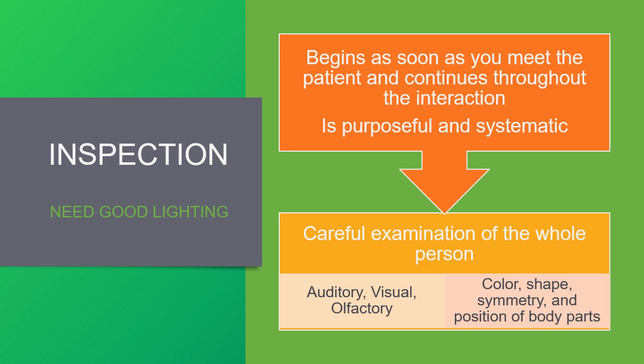Inspection begins as soon as you meet the patient and continues throughout the interaction. In order to properly inspect the patient, you need good lighting. It is purposeful and systematic, meaning that you're looking for very specific things — not just glancing at the patient — and you're looking in a specific order so that you don't accidentally miss something. Careful examination of the whole person uses your auditory, visual, and olfactory senses. You want to examine the color, the shape, the symmetry, and the position of body parts as you go along.